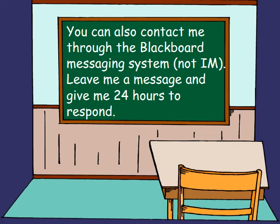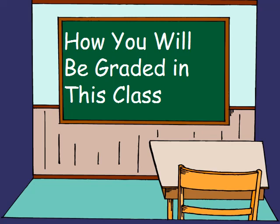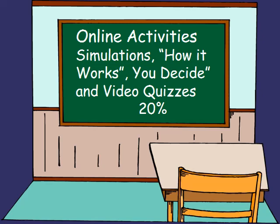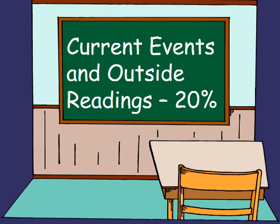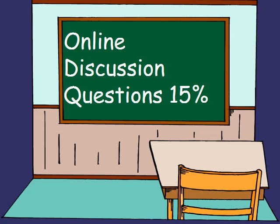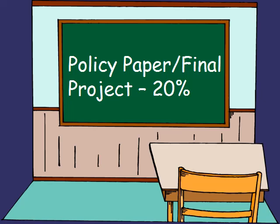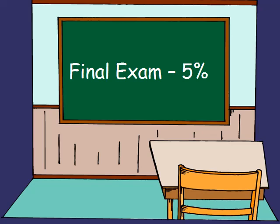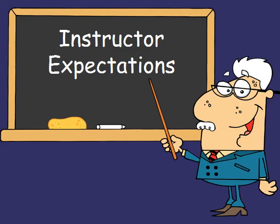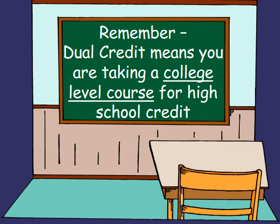Leave me a message and give me 24 hours to respond. Here is how you will be graded: online simulations, 'How It Works,' and video quizzes are 20%; current events and outside readings are 20%; online discussion questions are 15%; interactive textbook quizzes are 20%; the policy paper and final project are 20%; and your final exam counts for 5%. That totals 100%.